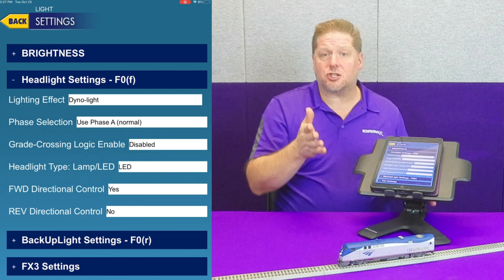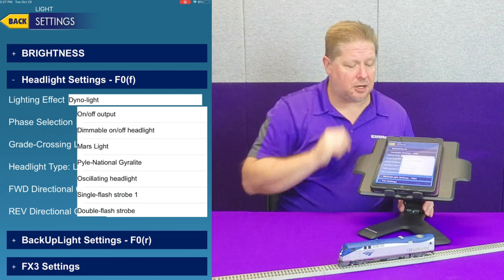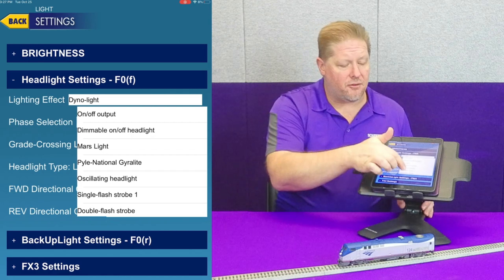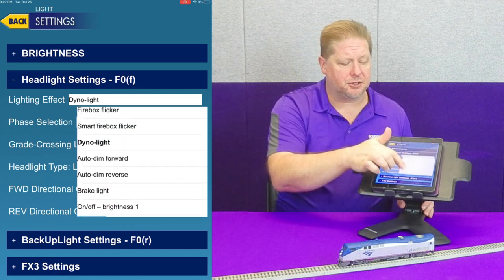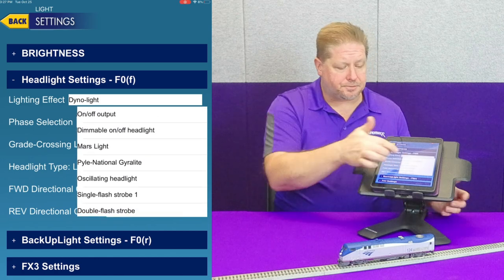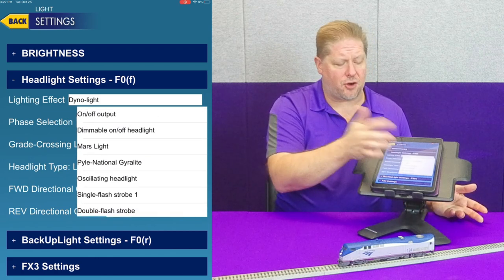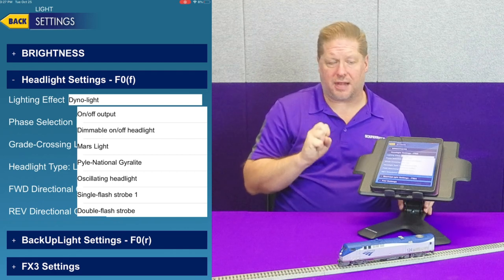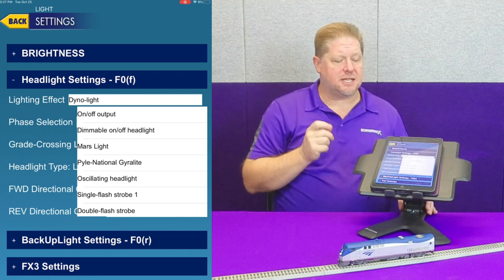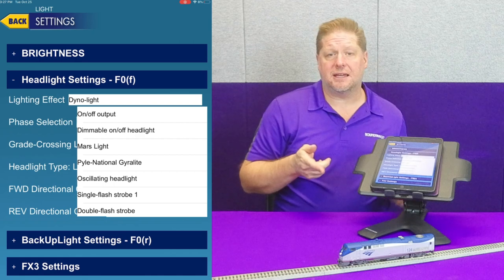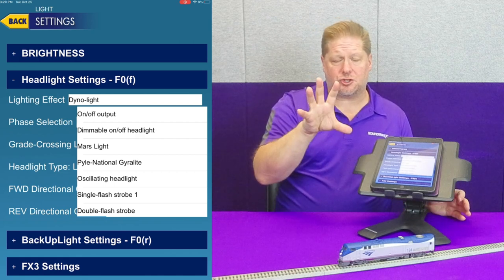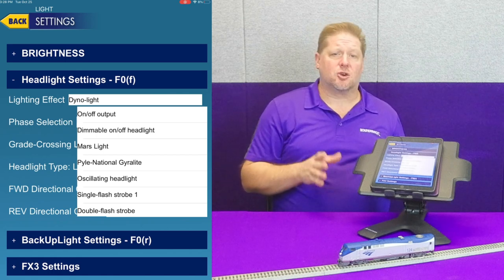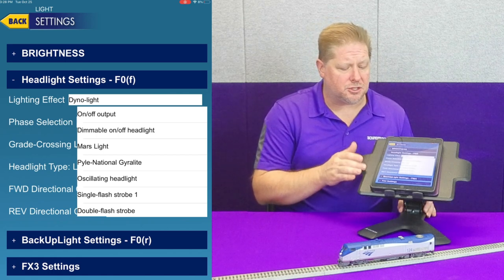To change the lighting effect, click on the menu, which pulls down a list of all the different lighting effects built into the decoder. First we have on/off output — a simple instant on/off light. Next is the dimmable on/off headlight, which allows you to turn it on and off and use F7 to dim. We don't necessarily need to demonstrate those two.